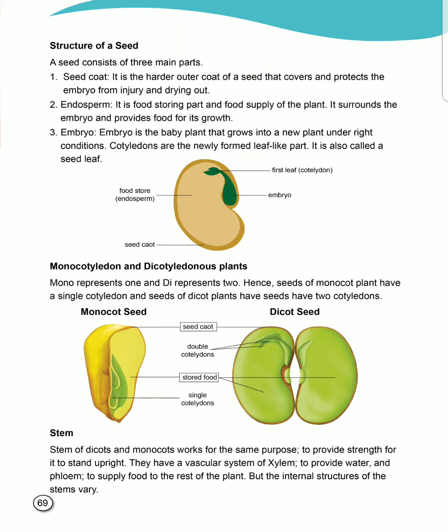Coming to monocotyledon and dicotyledon plants. Mono means one and di represents two. Monocot plants have a single cotyledon, and seeds of dicot plants have two cotyledons. As you can see in the picture, the seed coat of monocot and dicot are the same, but monocot seed has a single cotyledon and dicot seed has double cotyledon.